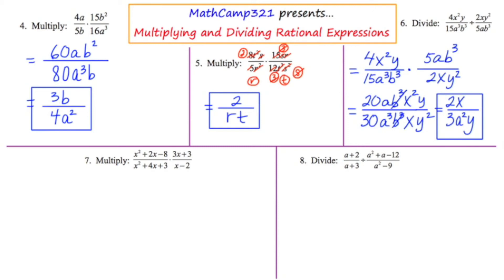I'm going to factor wherever possible — the top left, the top right, the bottom left, and the bottom right looks like it's already factored. Once I do this, I'm hoping there are factors common to the top and the bottom. Your success in this technique really depends on how good your factoring is.